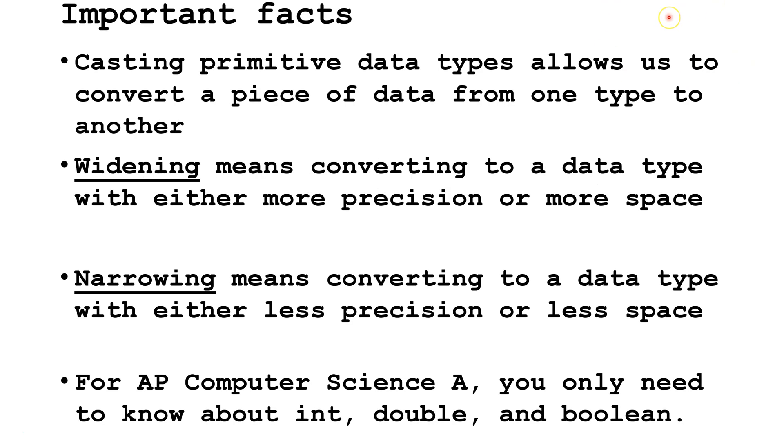Some important facts to know. First, casting primitive data types allows us to convert a piece of data from one primitive type to another. Widening means converting to a data type with either more precision, as in more decimal places, or more space, as in larger or smaller values.